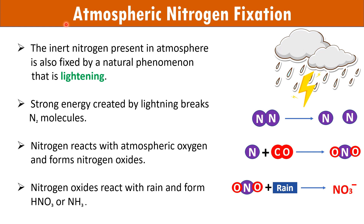Now let's discuss atmospheric nitrogen fixation. The nitrogen present in the atmosphere is non-reactive and stable because of the triple bond. A natural phenomenon that helps in nitrogen fixation is lightning. The energy of lightning breaks this stable nitrogen into its reactive form. Later, nitrogen atoms react with oxygen to form nitrogen oxides. Since nitrogen oxides cannot be used by plants, they react with rainwater to form nitric acid and ammonium ions, which are used by plants.